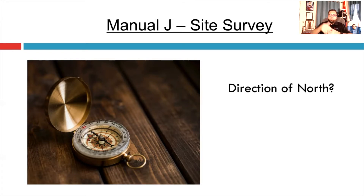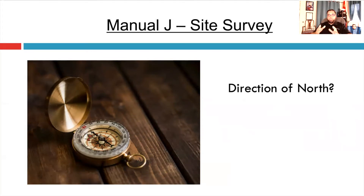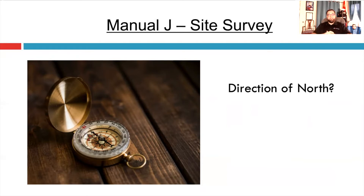North always pops up facing north on Google Maps, and you can verify which way that floor plan is facing. It does impact the load, so it's really important. Make sure people are actually getting the correct direction, not the direction that provides the highest load. I've seen people change the compass in RightSoft and just go with the highest, which is not correct. We want to get the real loads for that home, and in order to verify it, we have to have that right.